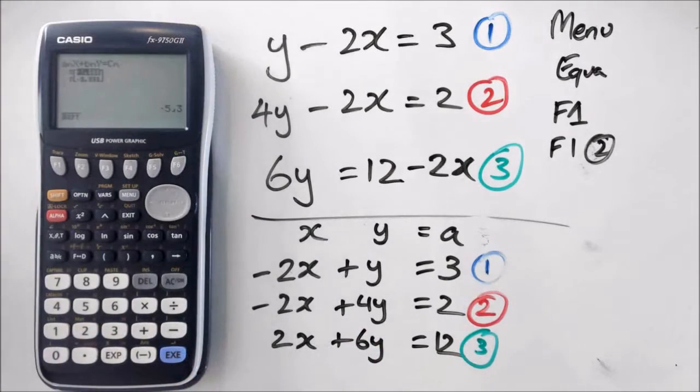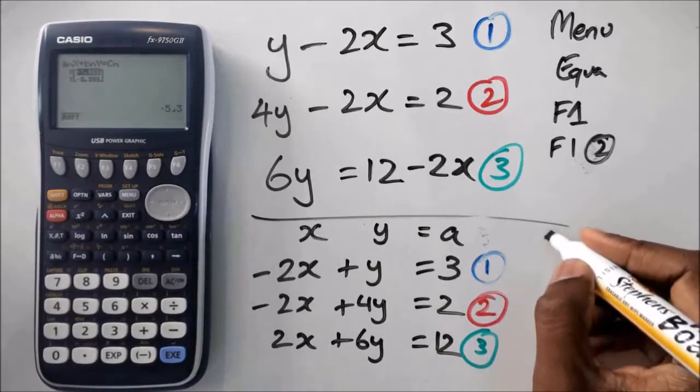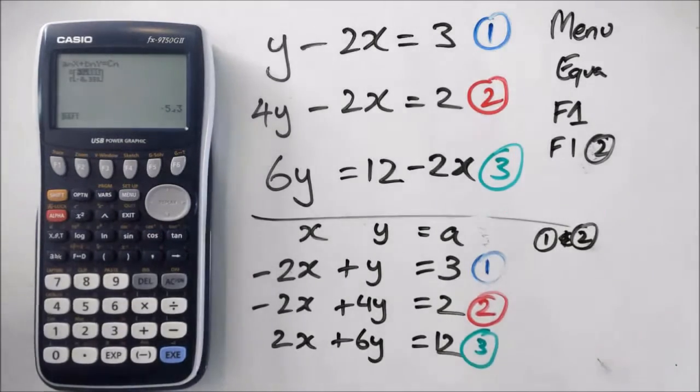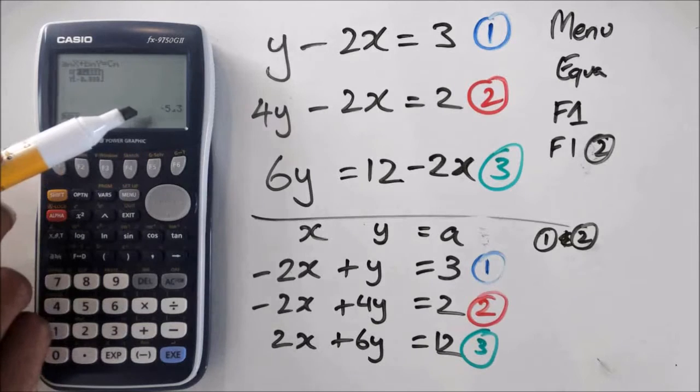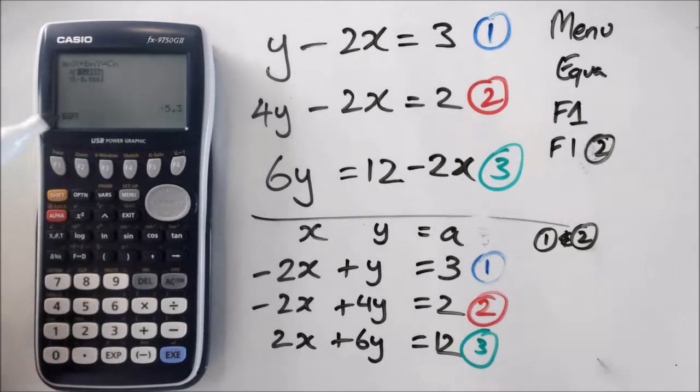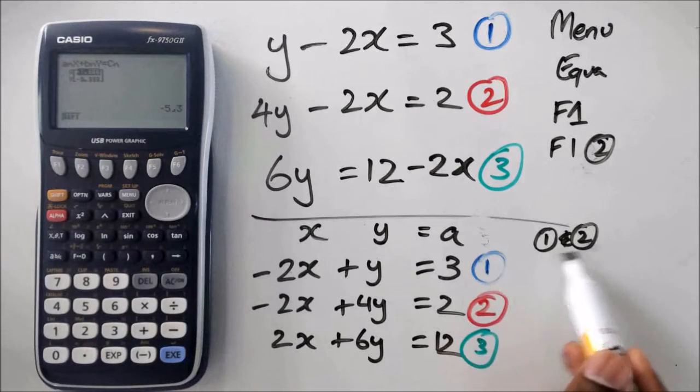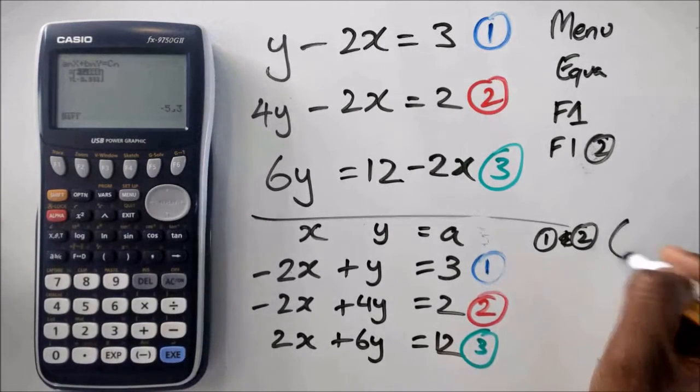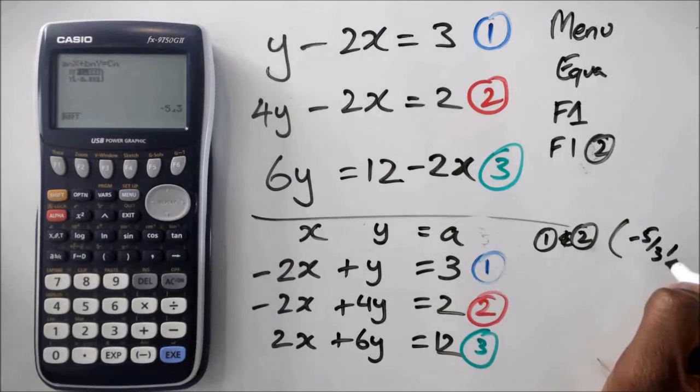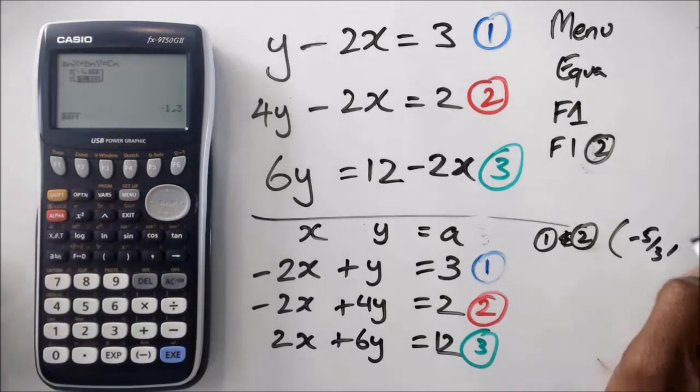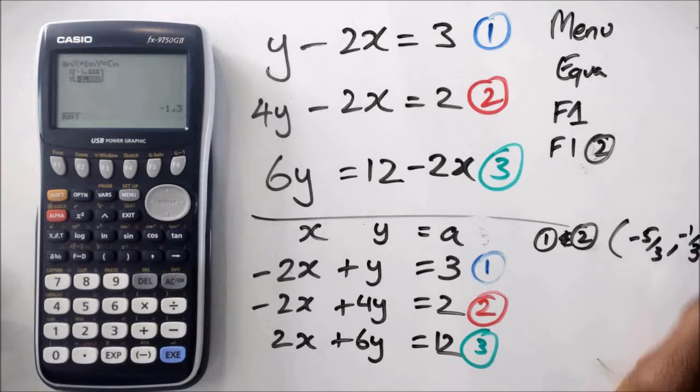When I solve it, I'm actually going to get my coordinates of where those two lines meet. So for equation 1 and 2, you guys can see how that's actually given in decimal point, right? But at the corner here, see how it said negative 5 over 3? So the first value is x, the second value is y. So line 1 and line 2 meet at negative 5 over 3, and the y value is negative 1 over 3.